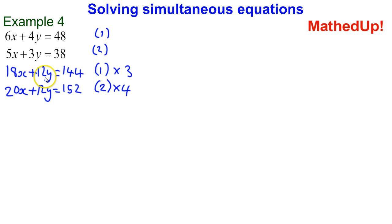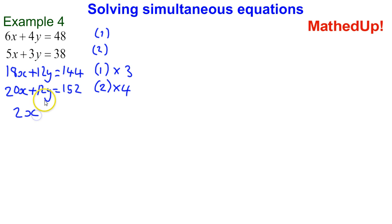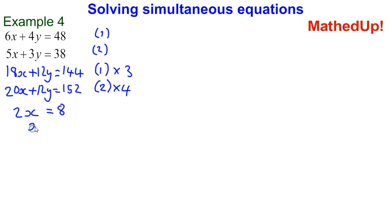And because that's plus and that's plus, I can do equation 2 take away equation 1. So, that's going to make this 20x take away 18x, which gives me 2x. 12y take away 12y gives me no y, and 152 take away 144 gives me 8. And if 2 times x is equal to 8, x is going to be equal to 4.